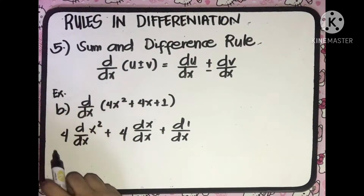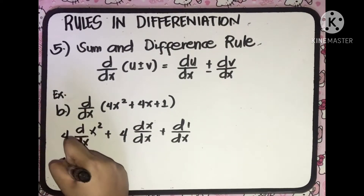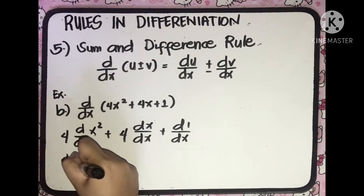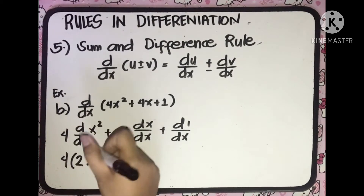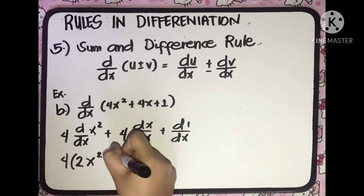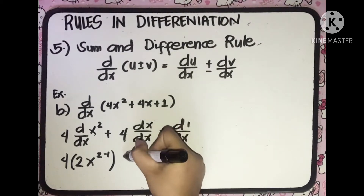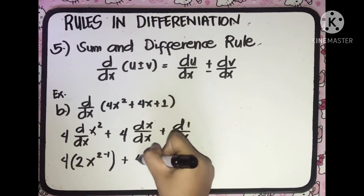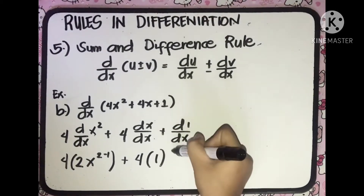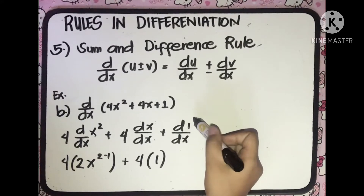Applying the Power Rule to the first term: we copy the constant 4, then apply the Power Rule to get 2 multiplied by x to the power of 2 minus 1. For the second term, we copy the constant 4, and the derivative of x with respect to x equals 1, so times 1. Plus the derivative of the constant 1, which equals 0.